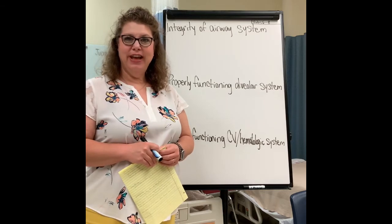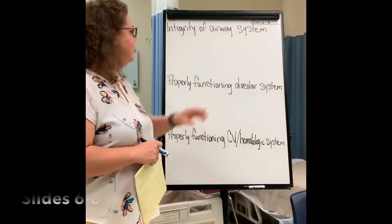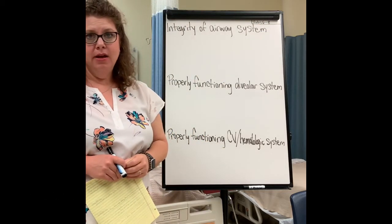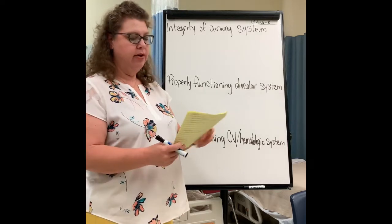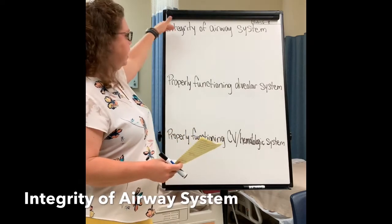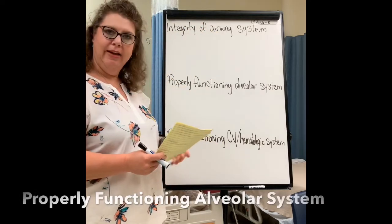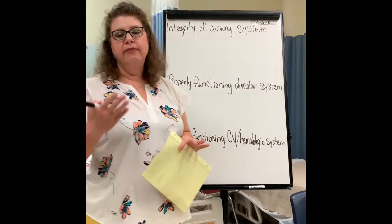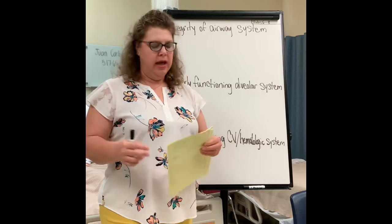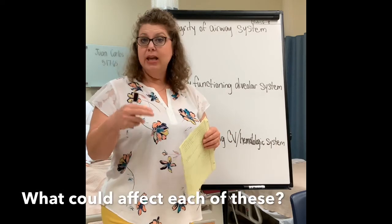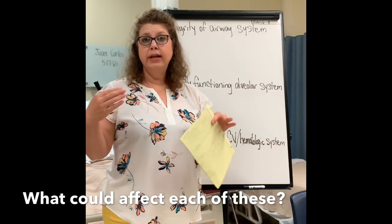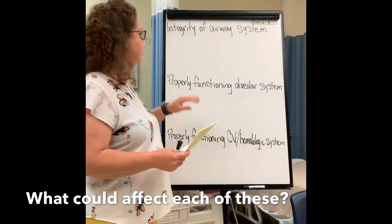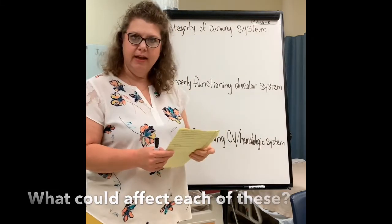Let's do this active learning strategy together. This correlates with slides six through eight — I'll put that as a reminder on the PowerPoint presentation for oxygenation. On a piece of paper, you should have three things listed: integrity of the airway system, properly functioning alveolar system, and properly functioning CV hematologic system. Now, the first thing we are going to do is talk about what could affect each of these things.